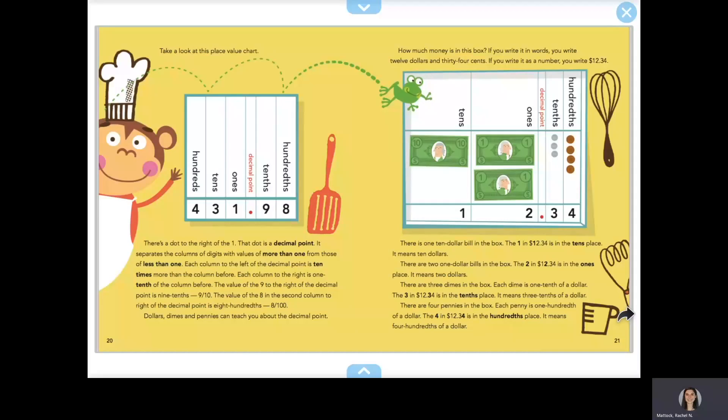The value of the nine to the right of the decimal point is 9 tenths, 9 out of 10. The value of the eight in the second column to the right of the decimal point is 8 hundredths, or 8 out of 100.